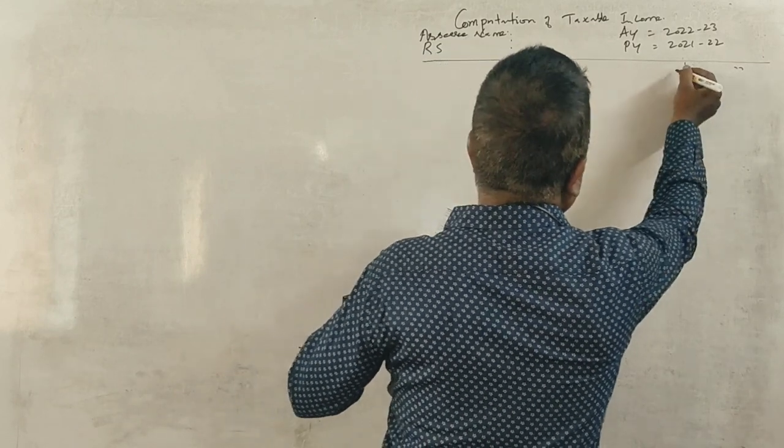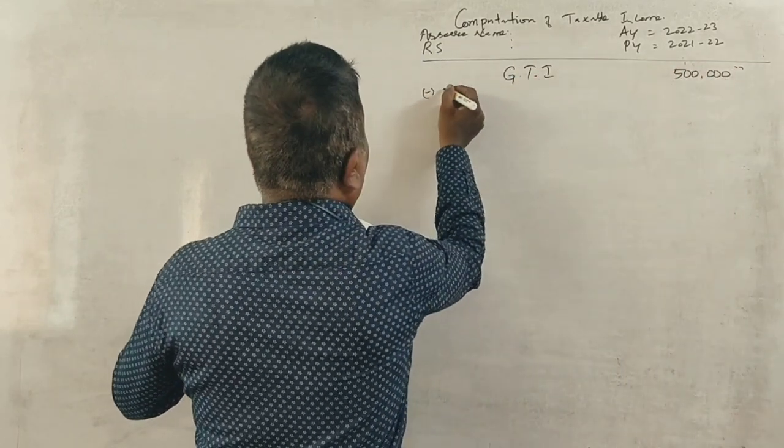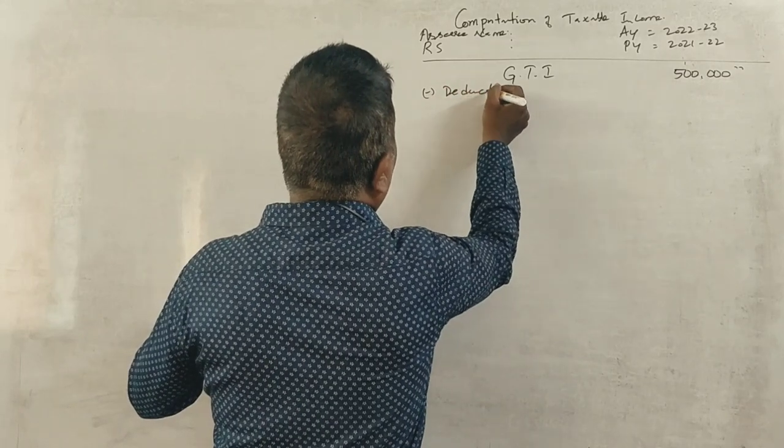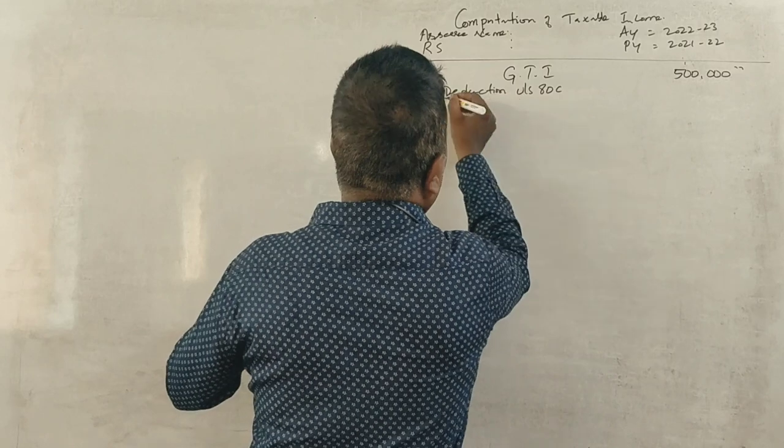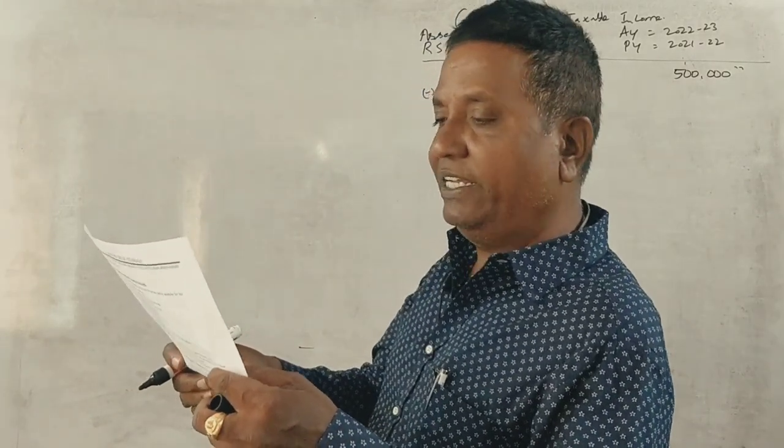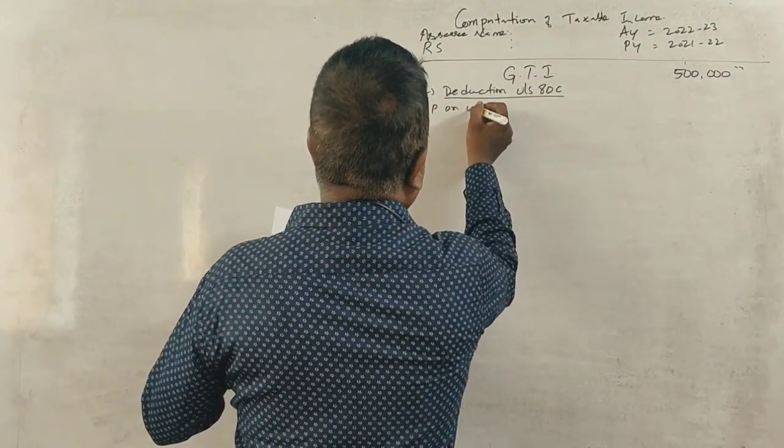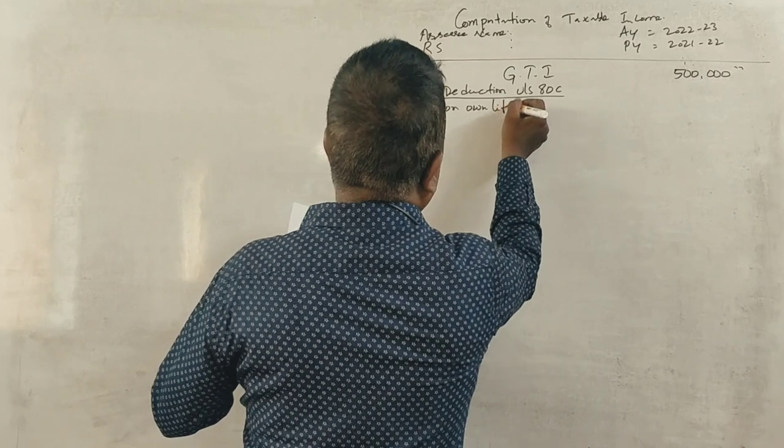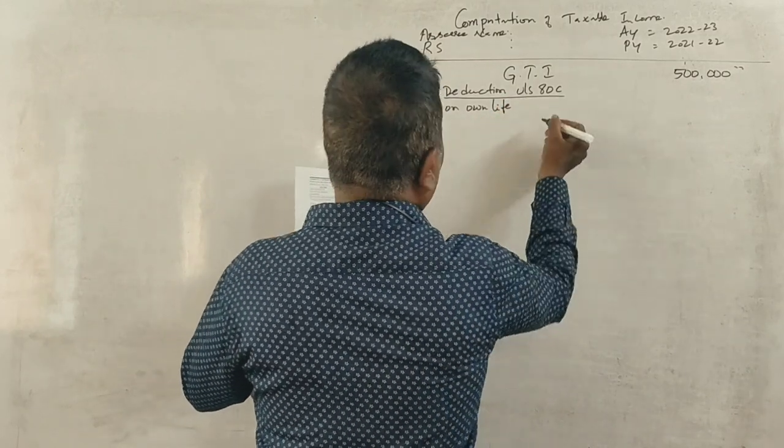Gross total income is already given as 5 lakhs. We have to give deductions. First, under section 80C. Under section 80C, what are the deductions he will get? First, L.I.P. on own life. What is it? 12,000.